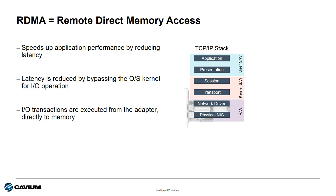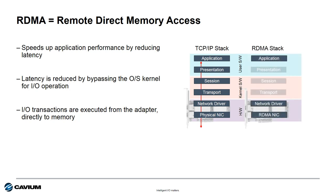If we look at networking I/O, we can speed up the performance of the network by reducing the latency. One way to do this is by implementing Remote Direct Memory Access, or RDMA-enabled I/O adapters. RDMA speeds up the applications by bypassing the software kernel in the host OS and allowing I/O transactions to be executed directly between the adapter and the application memory.